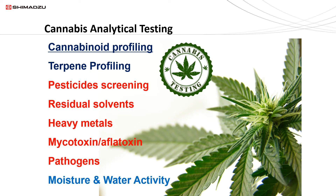The areas of testing include cannabinoid and terpene profiles shown in blue, as well as contaminant testing shown in red for pesticides, residual solvents, heavy metals, mycotoxins, and pathogens. Also of importance are moisture and water activity.